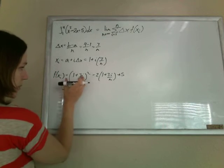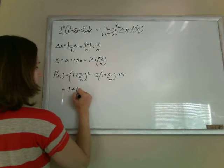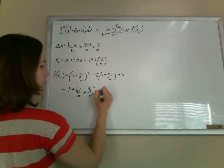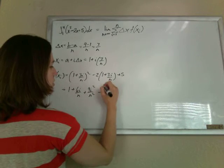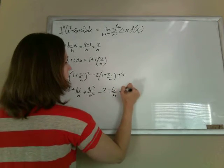Cleaning this up, this thing gets foil, so when you foil this, you get 1 plus 6i over n plus 9i squared over n squared. Don't forget that middle term in your foil. Distribute this, minus 2 minus 6i over n plus that 5.